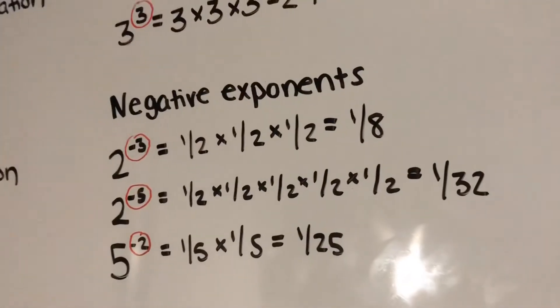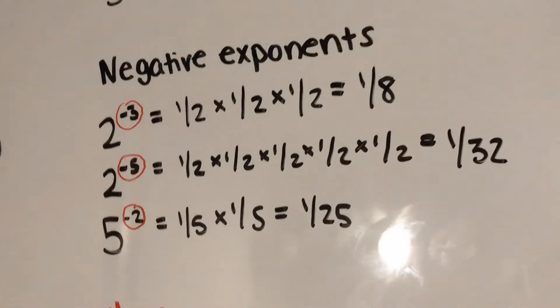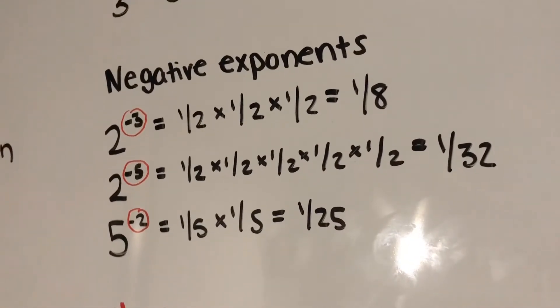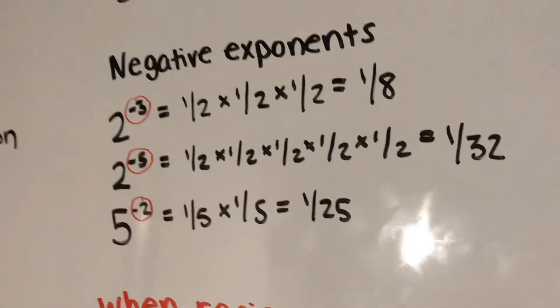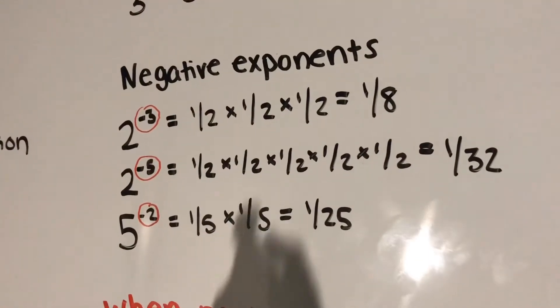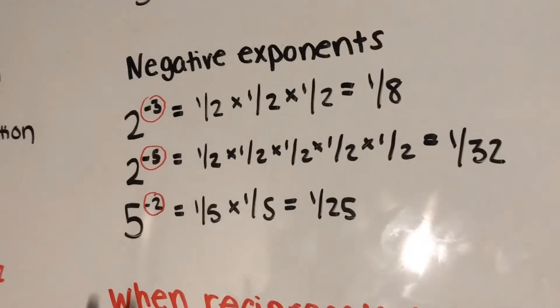Here we have negative exponents. So what we do here is use the reciprocal of the big number and put a 1 over it. So for 2, you put 1 over 2, and for 5 here, you put 1 over 5. And the same idea, you take the little number and you use it that many times.